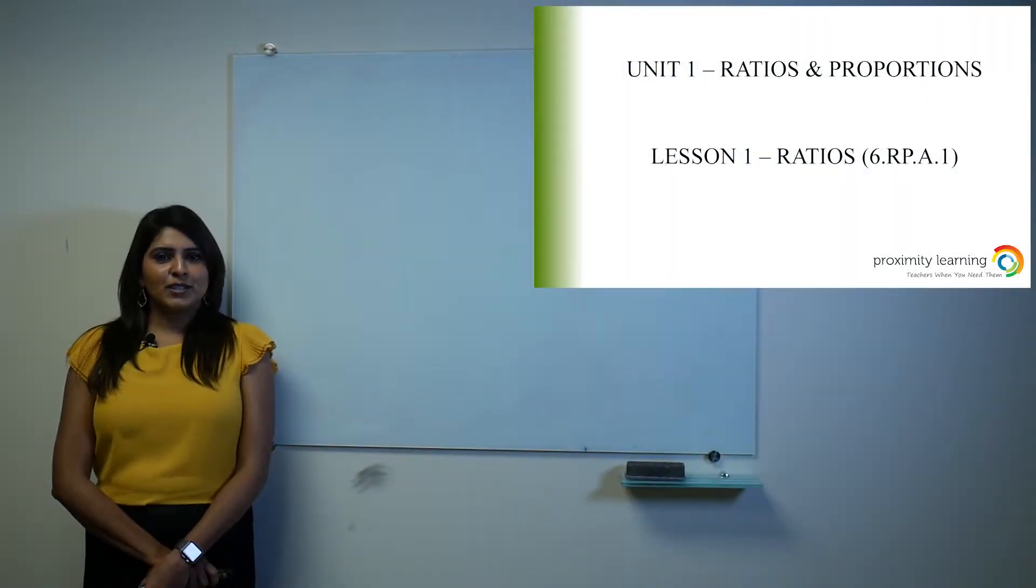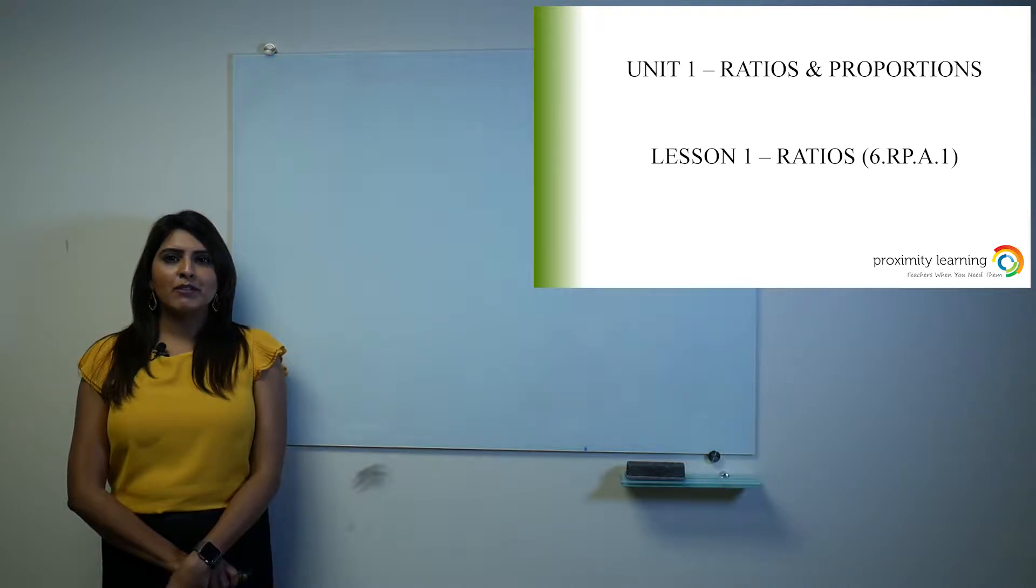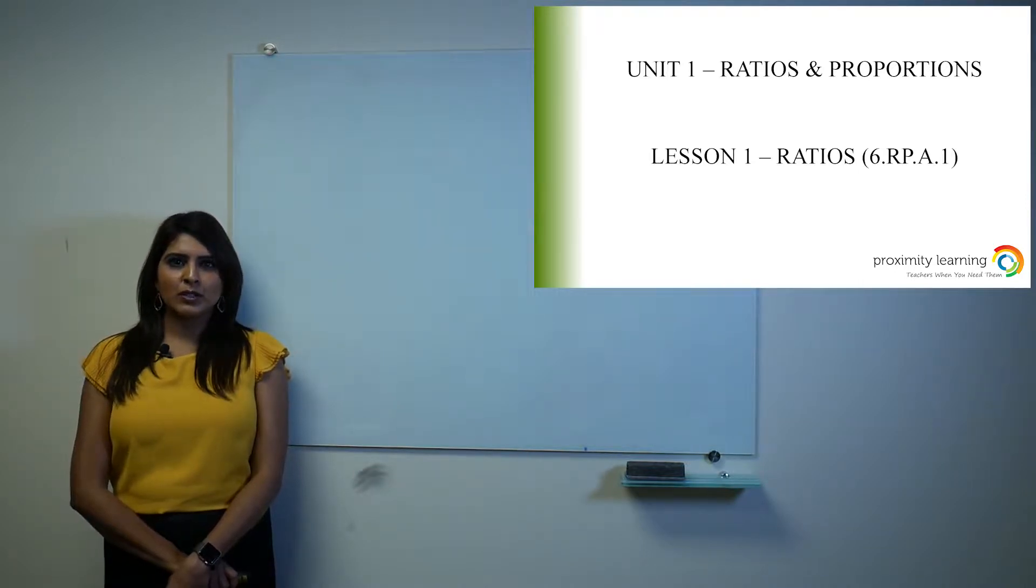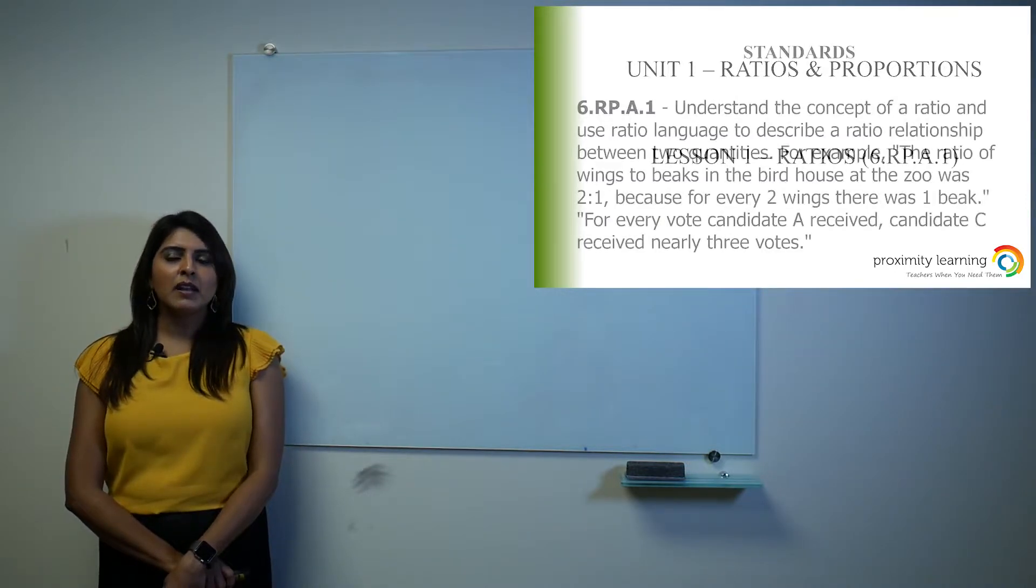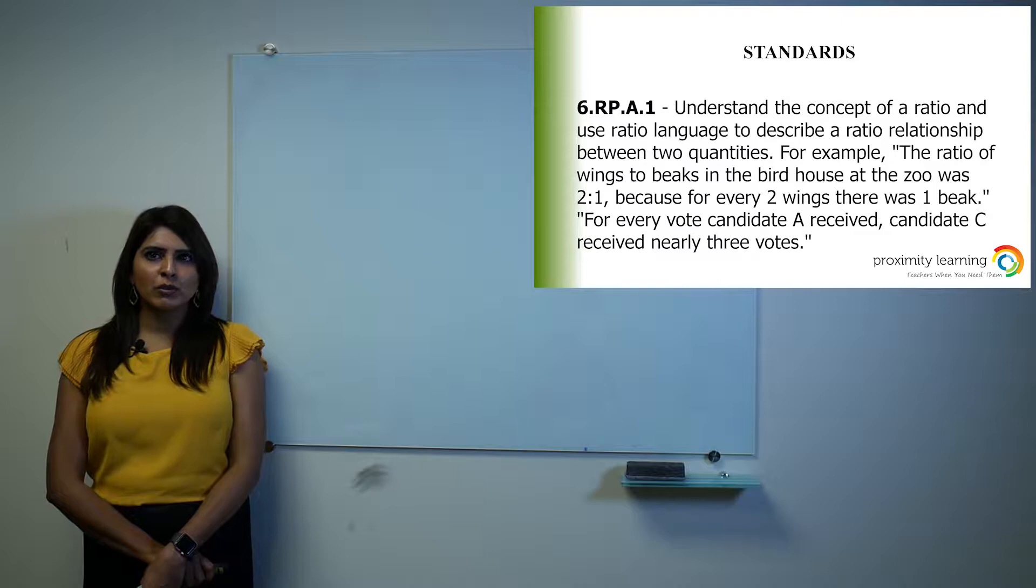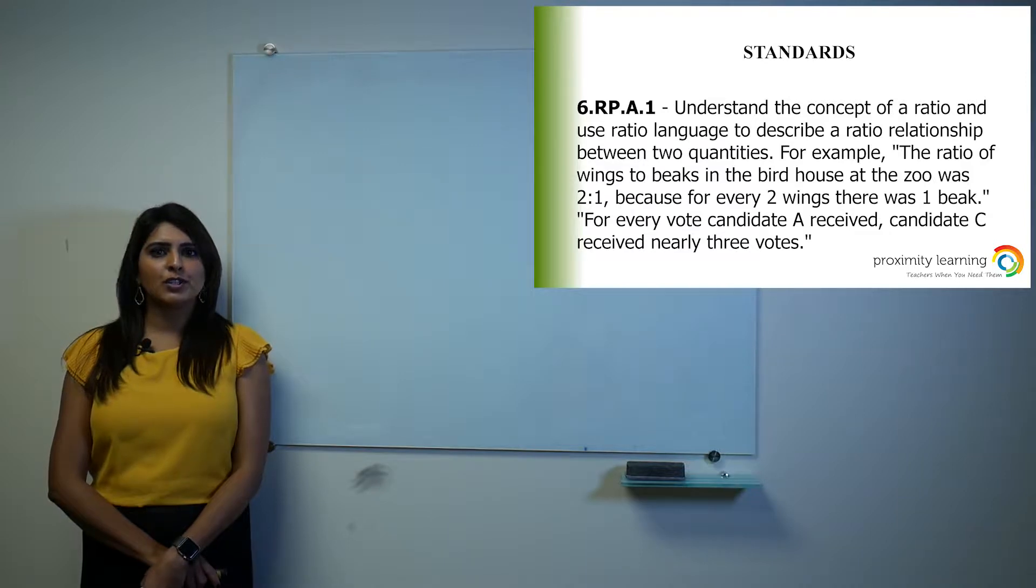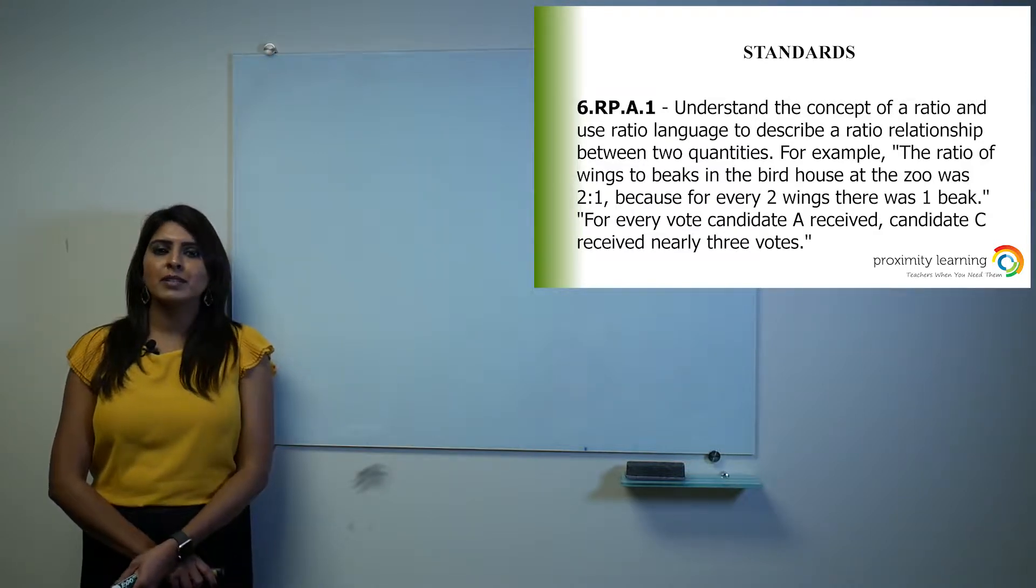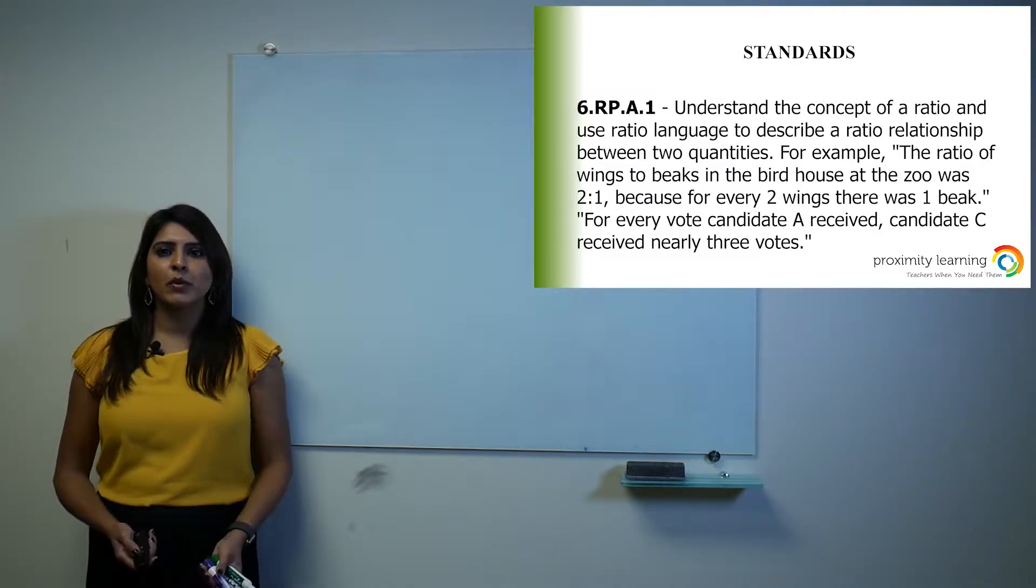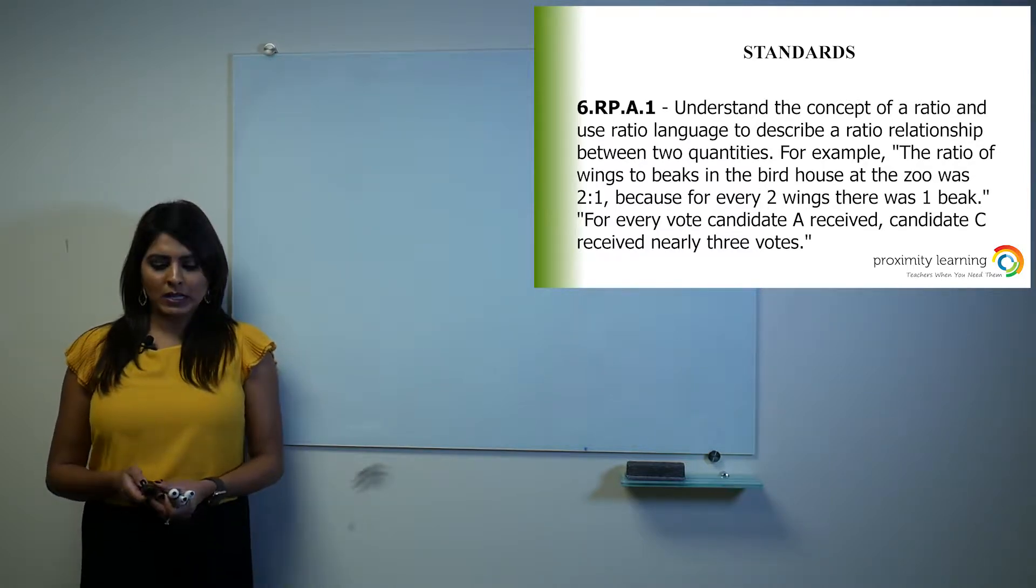Hello, today we're going to start unit one, ratios and proportions. This will be the very first lesson we do on this topic. In this lesson, we're going to talk about understanding the concept of ratio and using ratio language to describe a ratio relationship between two quantities. So essentially, I'm going to teach you how to read a problem and determine the ratio of, for example, boys to girls or apples to oranges.